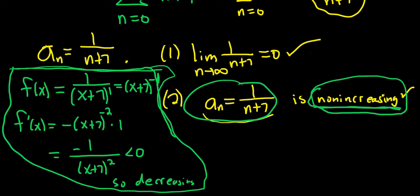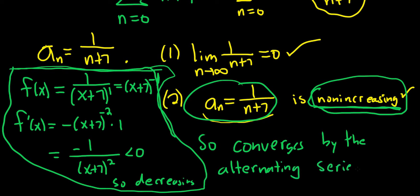So we have those two conditions. Because both are satisfied, you say it converges by the alternating series test. You could abbreviate it. You could write it as A-S-T. That would also work.